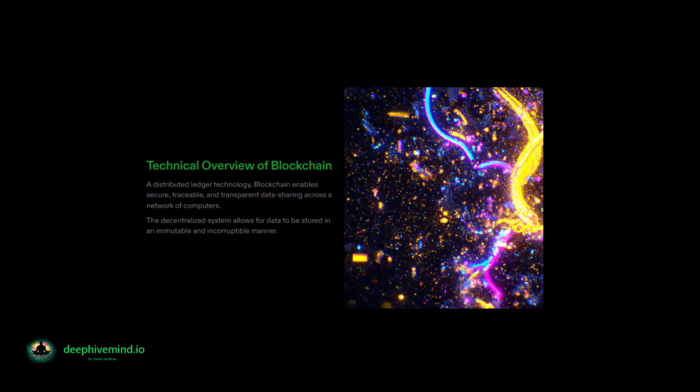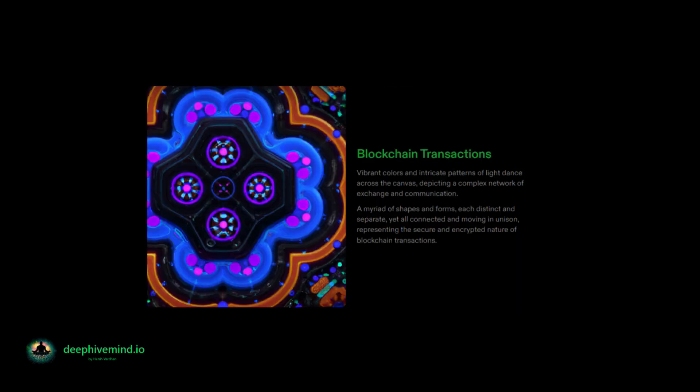Blockchain basics: blockchain technology can be used to create a tamper-proof digital record of transactions, and it is based on three key concepts — blocks, which are records of transactions; a decentralized network of computers, which maintain the ledger; and cryptography, which is used to secure the transactions and protect the integrity of the ledger. Transactions on a blockchain network are grouped together in blocks, and each block is linked to the previous block through the use of cryptography. Once a block is added to the blockchain, the transactions within it become permanent and cannot be altered.